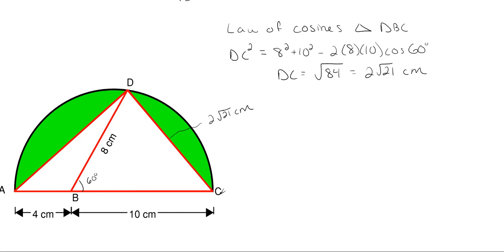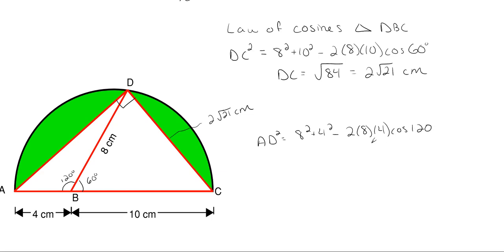There are two paths to find AD. Since this is a right triangle we could use the Pythagorean theorem, but using the law of cosines: the supplementary angle here is 120 degrees, so AD² = 8² + 4² − 2(8)(4)cos(120°), giving AD = √112 = 4√7 centimeters.